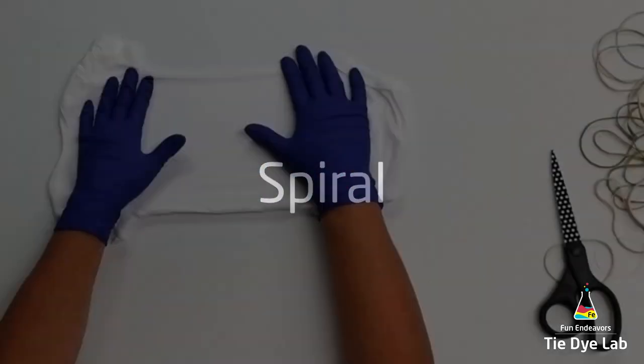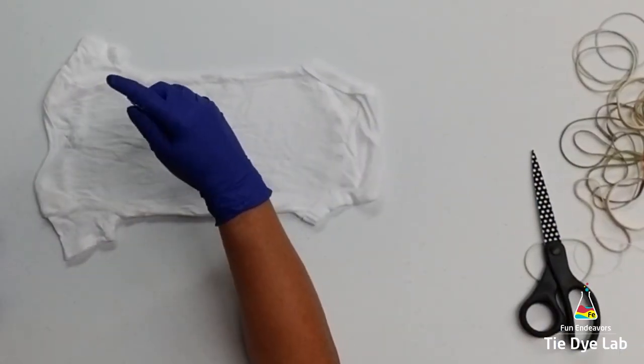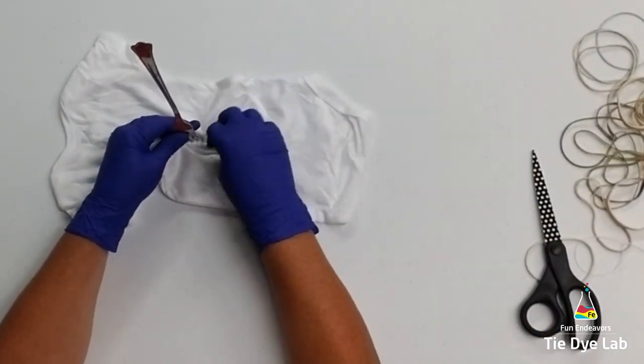The next one I'm going to do is a spiral. I'm going to use a fork and choose the spot in the middle of my onesie and begin to spiral it with a fork.